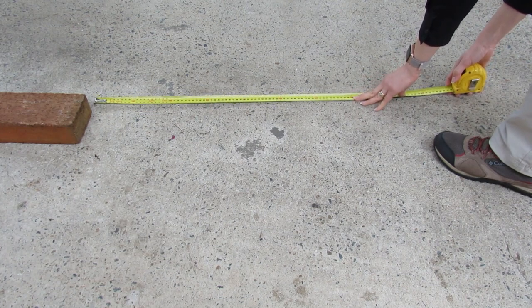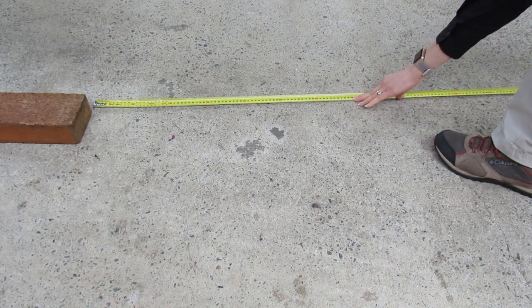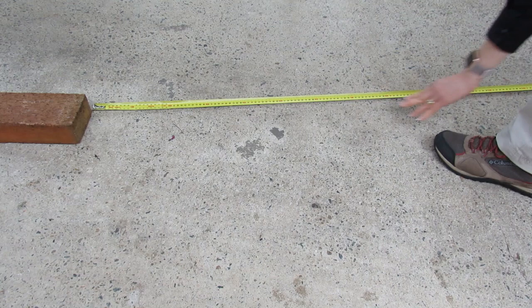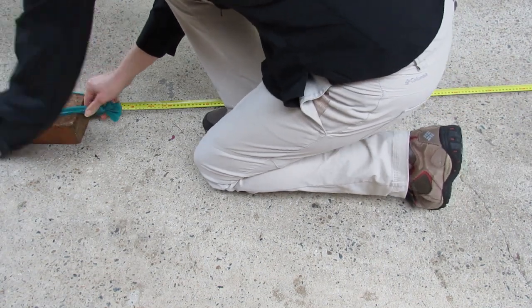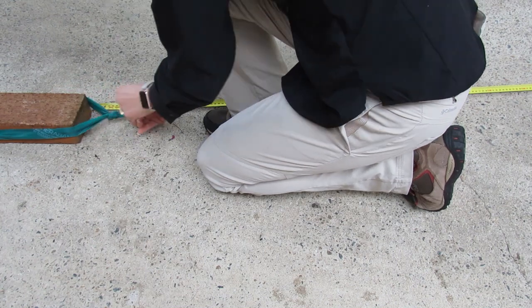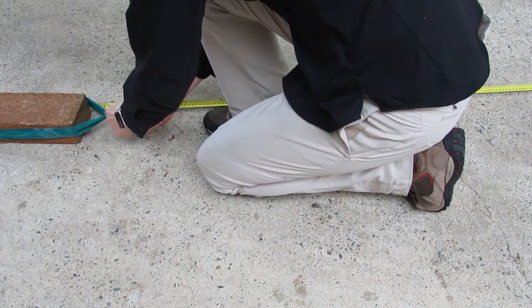Set up your experiment on a level concrete surface. Place the brick on the ground and the tape measure alongside it with the front of the brick at zero. Put your loop of elastic around the brick and note the measurement you will start with when there's no stretch in the elastic.